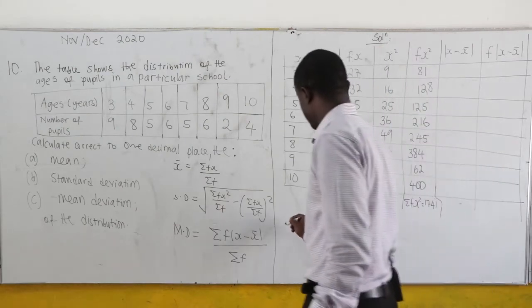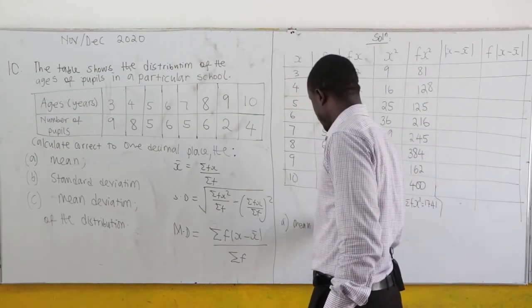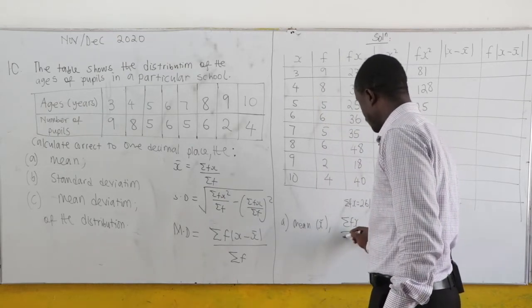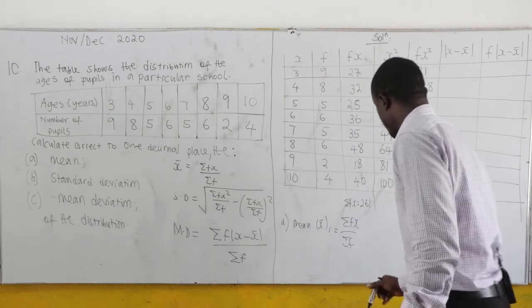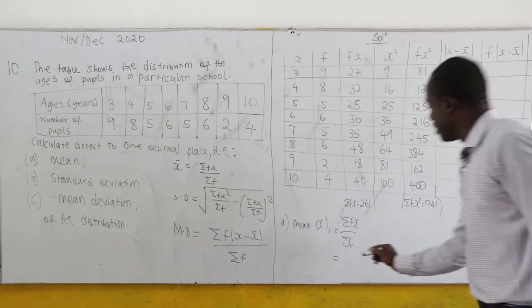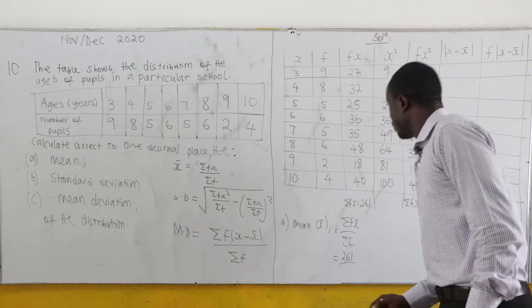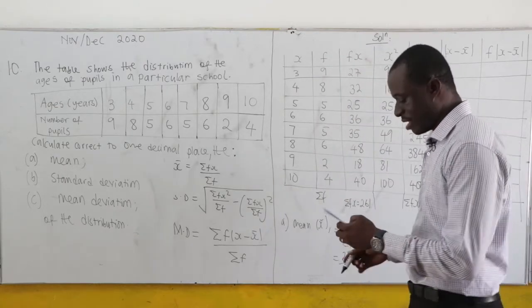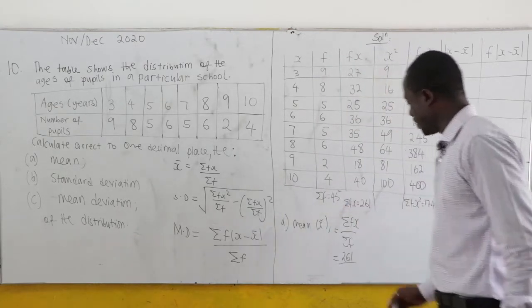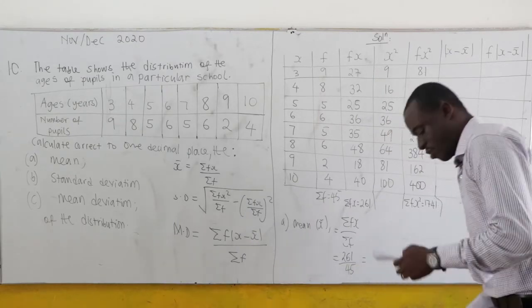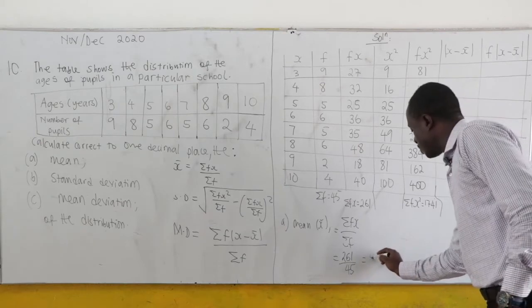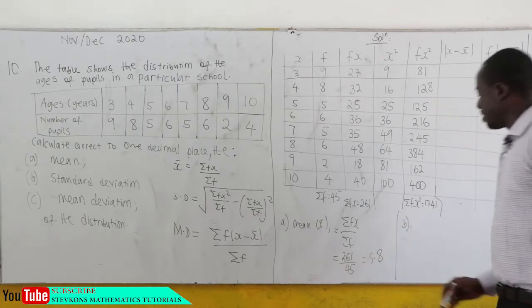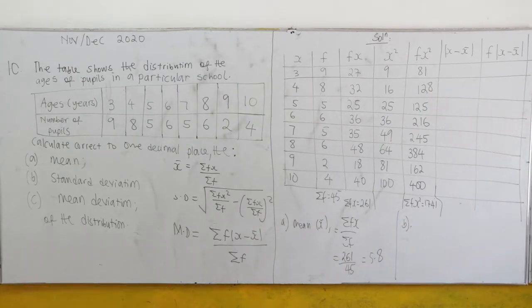For part (a), the mean = Σfx / Σf = 261 / 45. Σf is the sum of all frequencies, which equals 45. Working this out gives mean = 5.8.